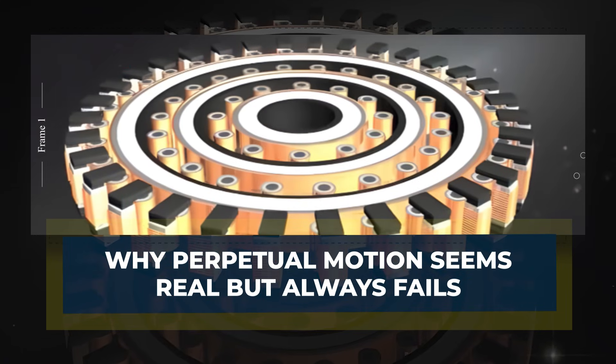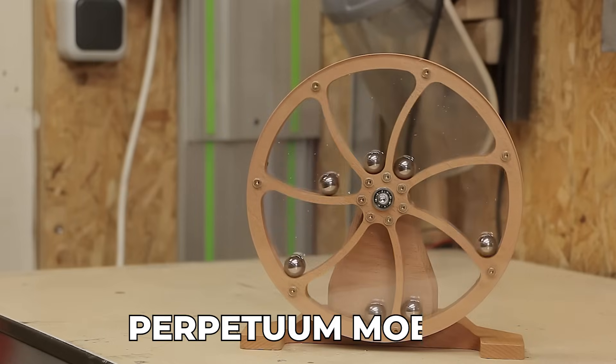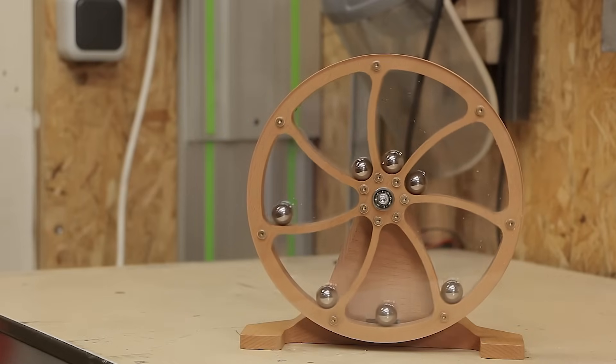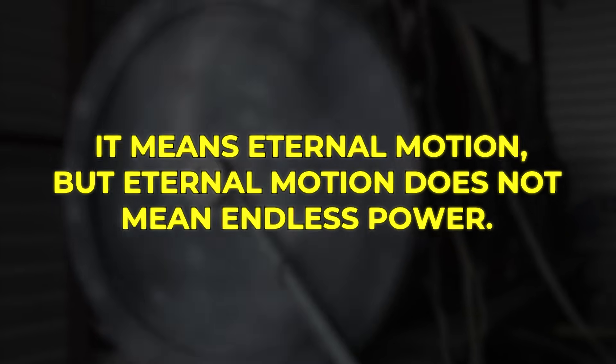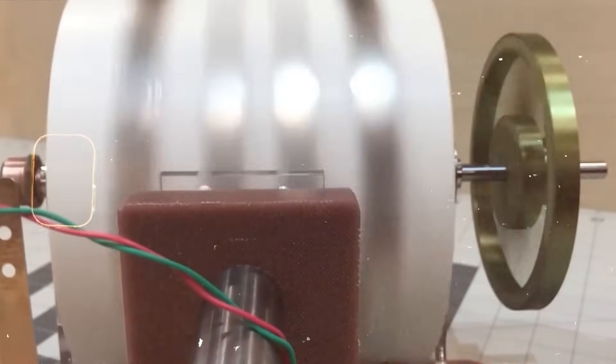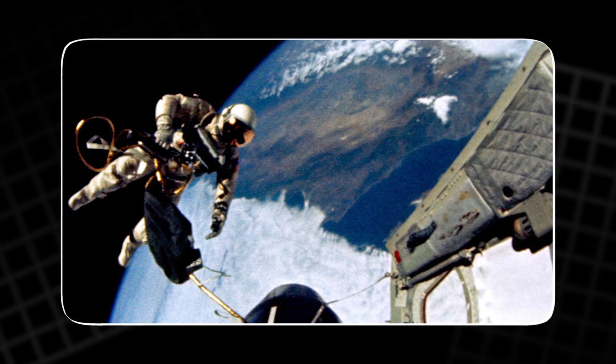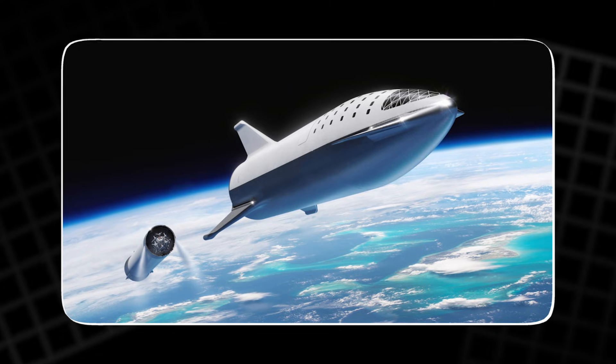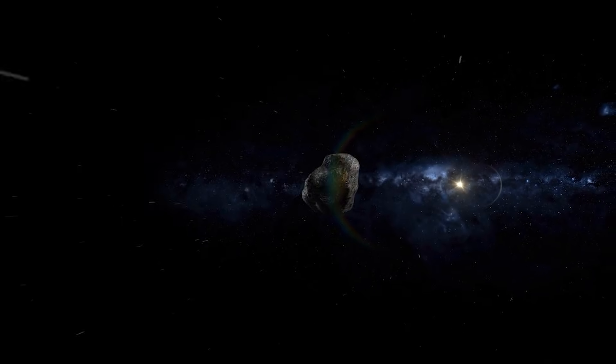Why perpetual motion seems real but always fails. The term perpetuum mobile has caused misunderstandings for centuries. It means eternal motion. But eternal motion does not mean endless power. If something moves forever, it does not create energy. The best example comes from space. If you throw an object while floating outside a spacecraft, it will move endlessly unless it hits something. But the object carries only the energy you gave it.